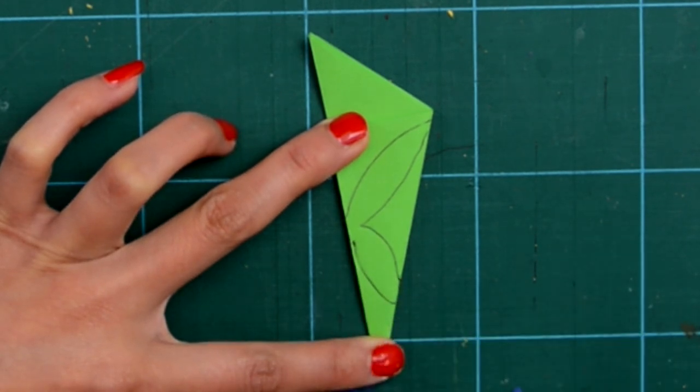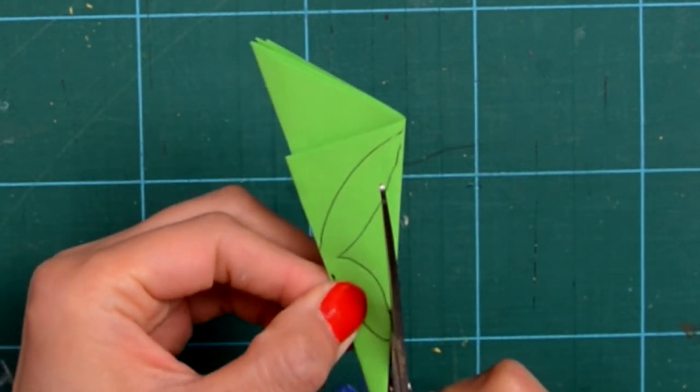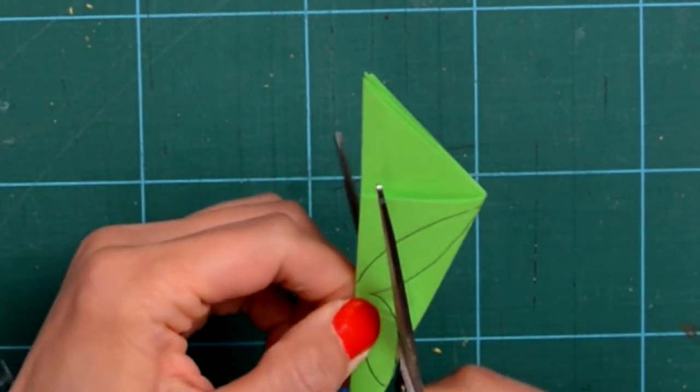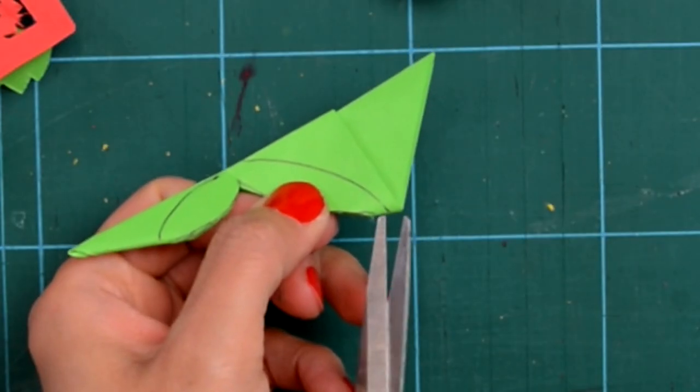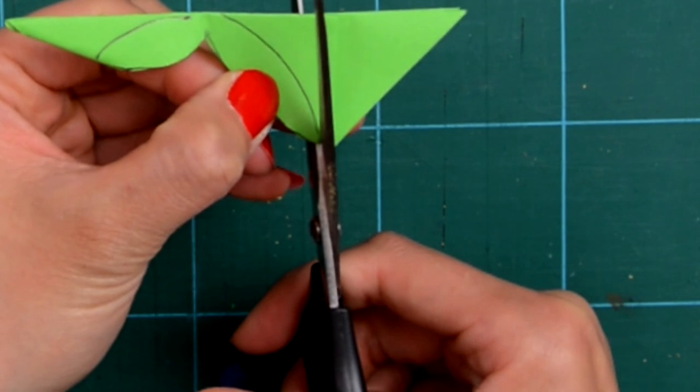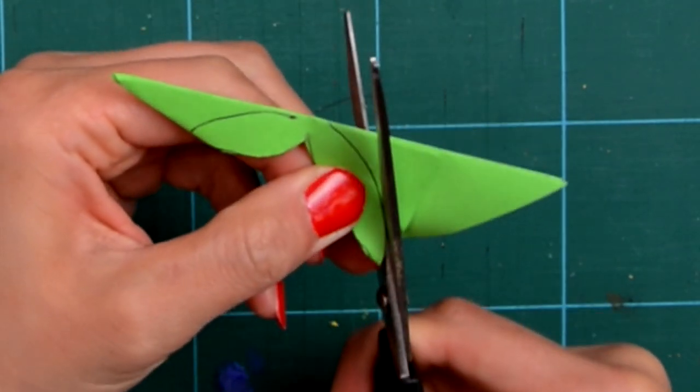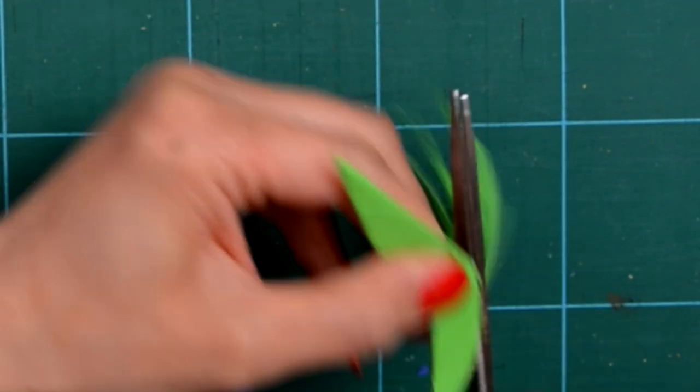And then now I'm going to cut it. So that bit, make sure it's connected. Keep a tiny bit. It's not going to affect the shape but then it's connected.